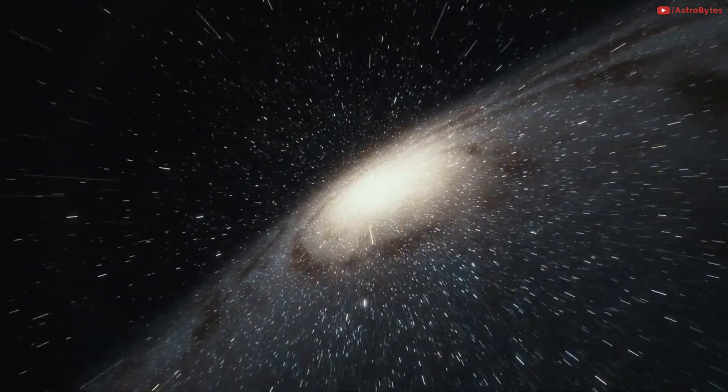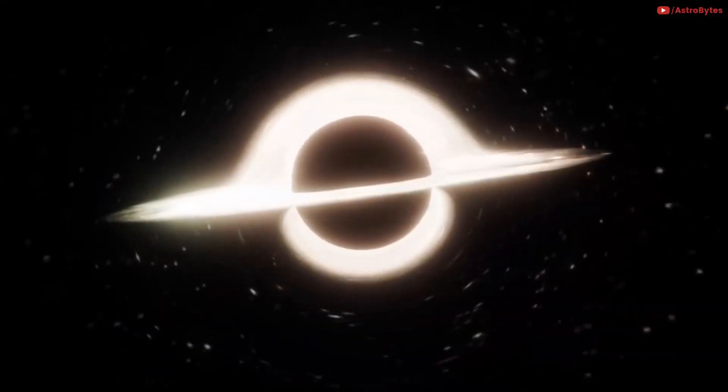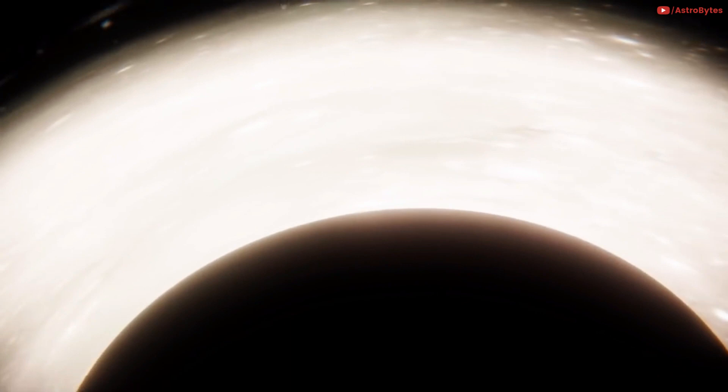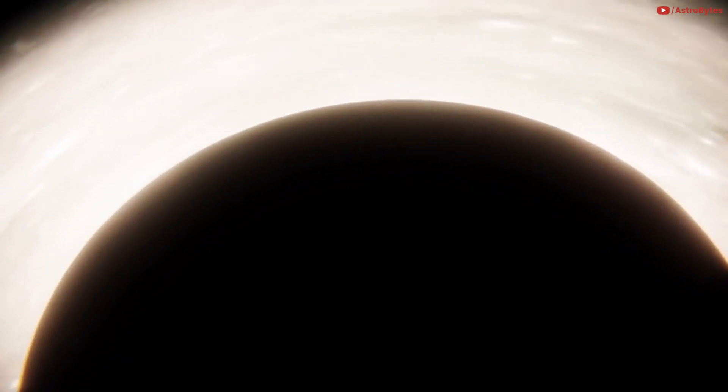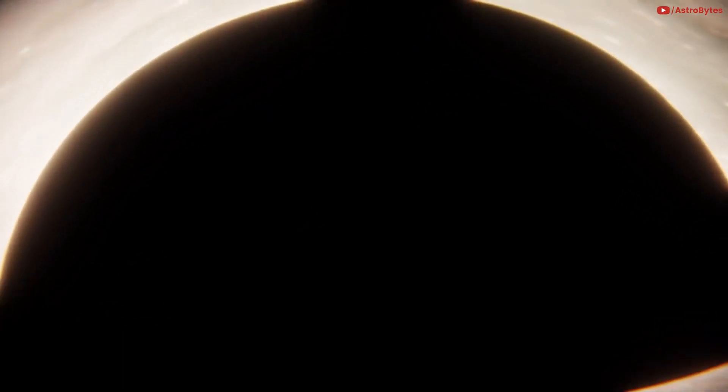At one nucleus sits a supermassive black hole that is about 200 million times more massive than our sun. It is significantly larger than the black hole at the center of Milky Way, which is just about 4 million times more massive than our sun.